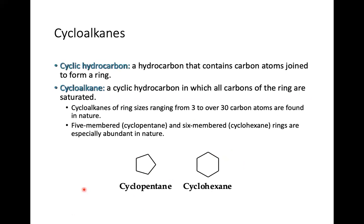A cyclic hydrocarbon contains carbon atoms joined to form a ring. A cycloalkane is a cyclic hydrocarbon in which all carbons in the ring are saturated — single bonds only. Cycloalkanes with ring sizes ranging from three to over 30 carbon atoms are found in nature. Five-membered cyclopentane and six-membered cyclohexane rings are especially abundant in nature.